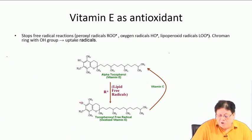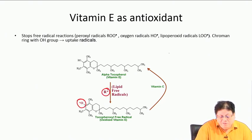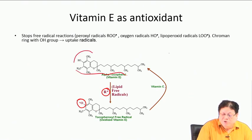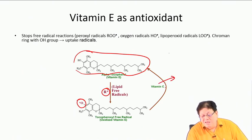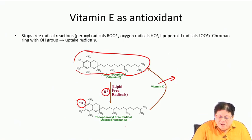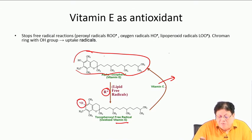Vitamin E abstracts any radical R•, donates its hydrogen, and forms the stable O• radical. This radical must be brought back to the original tocopherol form. Vitamin C is also essential to bring the vitamin E free radical back to tocopherol.